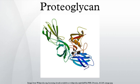Proteoglycans are proteins that are heavily glycosylated. The basic proteoglycan unit consists of a core protein with one or more covalently attached glycosaminoglycan chains. The point of attachment is a serine residue to which the glycosaminoglycan is joined through a tetrasaccharide bridge. The serine residue is generally in the sequence ser-gly-x-gly, although not every protein with this sequence has an attached glycosaminoglycan. The chains are long, linear carbohydrate polymers that are negatively charged under physiological conditions due to the occurrence of sulfate and uronic acid groups.